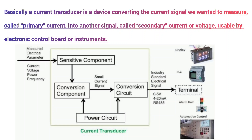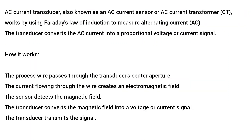Basically, current transverser gives the signal to DCS PLC automation systems, to measure the system's voltage or current in analog 4 to 20 milliamp. Current transverser converts the AC current into directly proportional voltage or current.